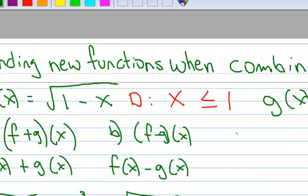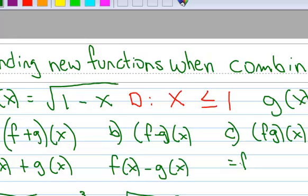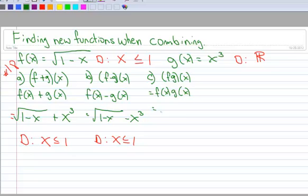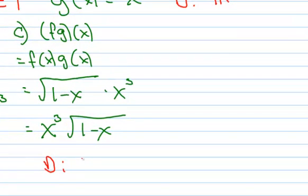All right, let's move on to multiplication. So in multiplication, we have f times g of x. So this means I have f(x) multiplied by g(x). So I have square root of 1 minus x, so I'm going to multiply that by x cubed. And then typically we just write it in the front. And let's talk about our domain of this one. So again, I can't have a negative in the radical there, so x has to be less than or equal to 1.